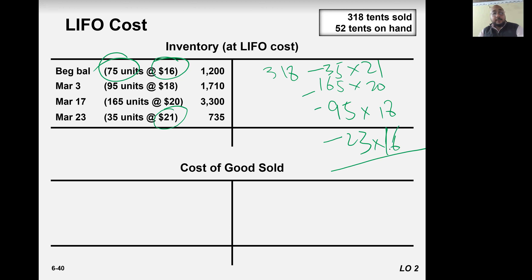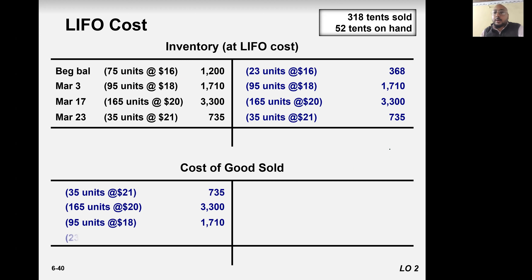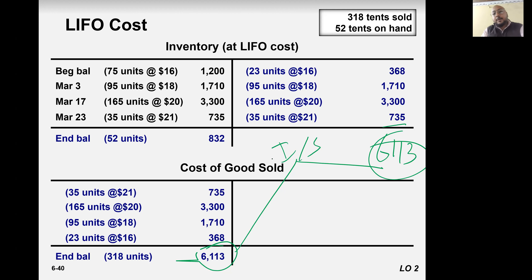If you add these, your cost of goods sold is going to be 6113. That will go to the income statement. And 52 units from the 16 value will be 832.